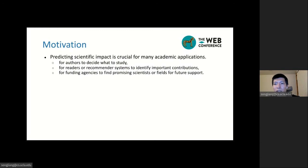Let's first talk about the motivation. There are lots of citation papers coming out every year. If we can predict the scientific impact of those papers, it will be much helpful for many academic applications. For example, authors can know what to study. Readers and academic recommender systems can know which paper has important contributions. It also helps the funding agencies to identify who and which field they should give funding.